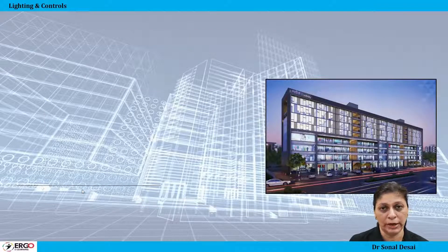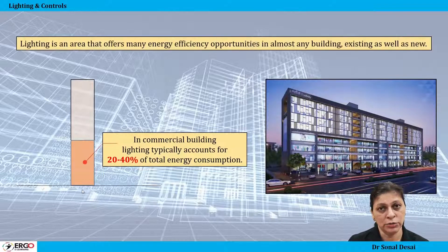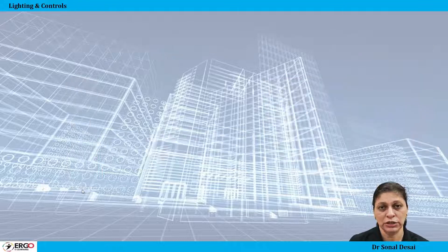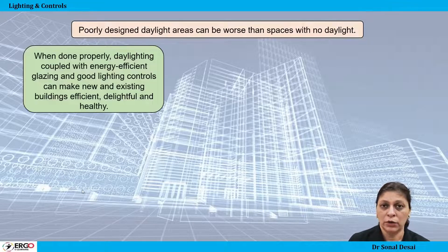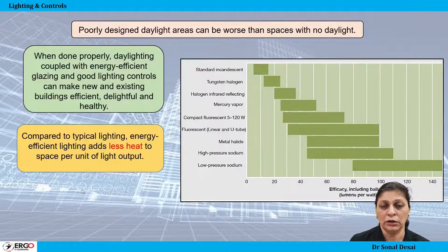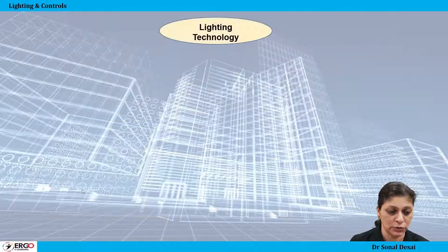Lighting consumes 20 to 40% of energy in commercial buildings, so how it can be reduced is also a part of this course. What are the misconceptions or errors normally made while designing a lighting system for a building is also explained as part of this video series.